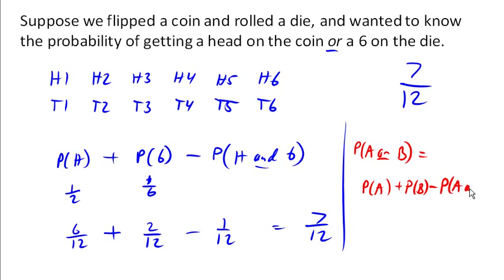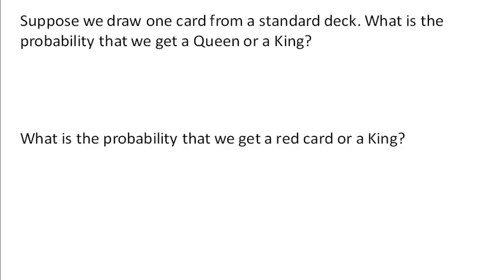And again, we've got to subtract out that end so that we're not double counting it. Let's see if we can use this. Now suppose we draw one card from a standard deck. What's the probability that we get a queen or a king?